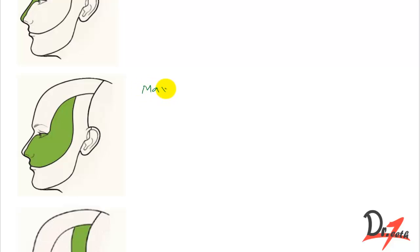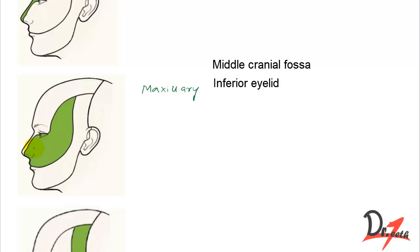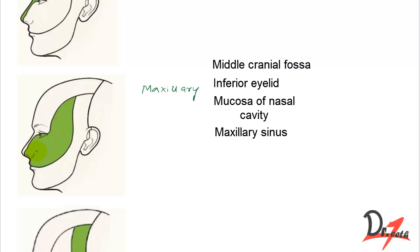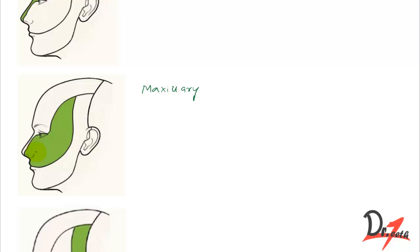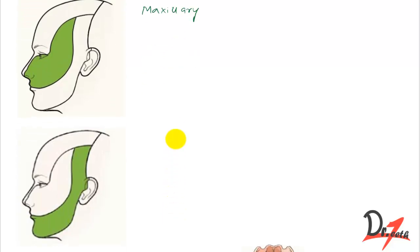The maxillary division supplies the dura mater of the anterior part of the middle cranial fossa, conjunctiva of the inferior eyelid, mucosa of the posterior inferior nasal cavity, the maxillary sinus, the palate, the anterior part of the superior oral vestibule, the maxillary teeth, skin of the lateral external nose, the inferior eyelid, anterior cheek, and the upper lip.